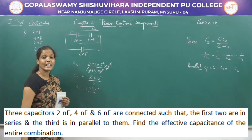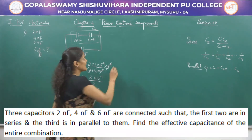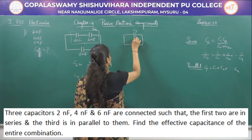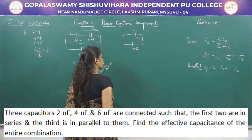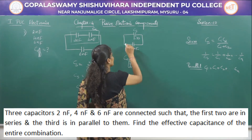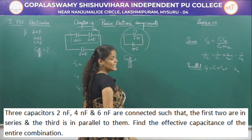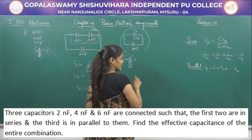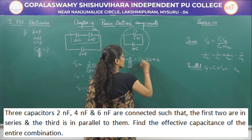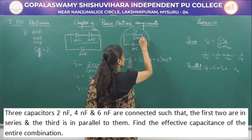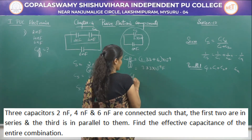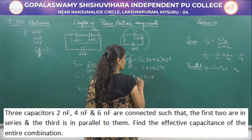In place of the two series capacitors we can use a single capacitor of 1.33 nanofarad. Now this is in parallel with the 6 nanofarad capacitor. For the parallel combination, C effective = 1.33 + 6 = 7.33 × 10⁻⁹ farad, so C effective = 7.33 nanofarad.